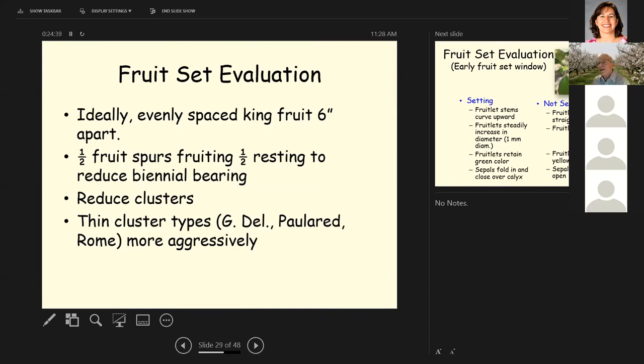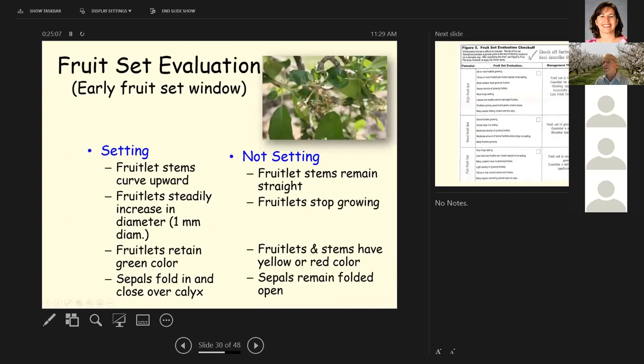You want to evaluate your fruit set. You may have thinned and then you want to get in seven to 10 days later and look at your fruit set. Ideally you want evenly spaced king fruit about six inches apart. You want half your fruit spurs fruiting and half resting to reduce biennial bearing. It's ideal to reduce clusters. We have cluster types like Golden Delicious, Gala Red and Rome that tend to set heavily in clusters. These are more aggressively thin.